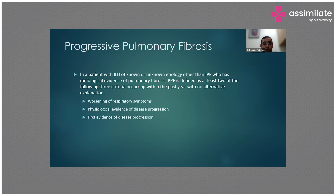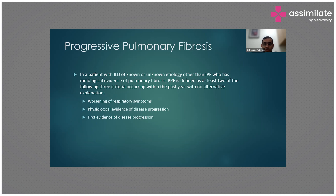Coming to a newer terminology which has recently been used very frequently in different papers, and which the guidelines have also mentioned: Progressive Pulmonary Fibrosis. This is the kind of ILD which progresses — it can be IPF or non-IPF. It should meet the following criteria: worsening of respiratory symptoms, physiological evidence of disease progression such as FVC and DLCO reducing over six months, and HRCT evidence of disease progression such as increase in fibrosis and newer lesions on the CT scan. This is separated because the treatment for progressive pulmonary fibrosis now places more importance on antifibrotic agents.